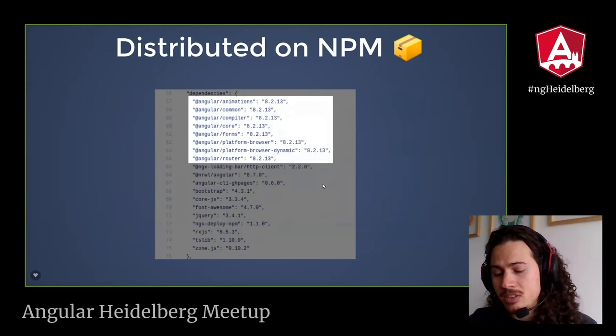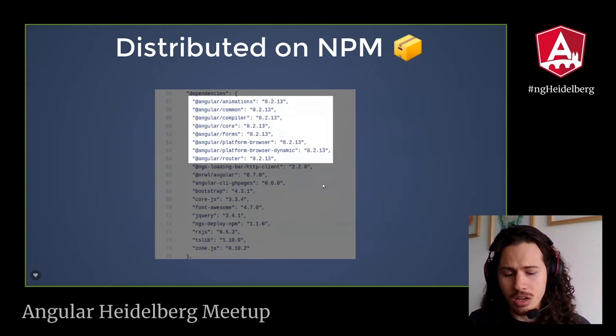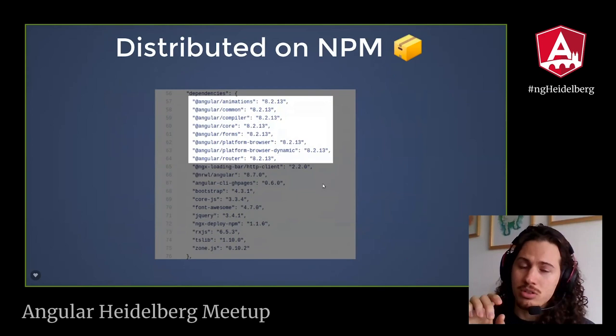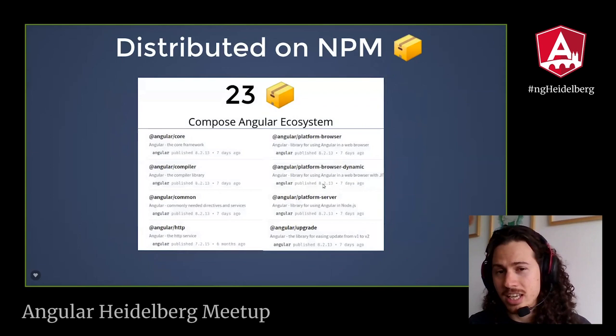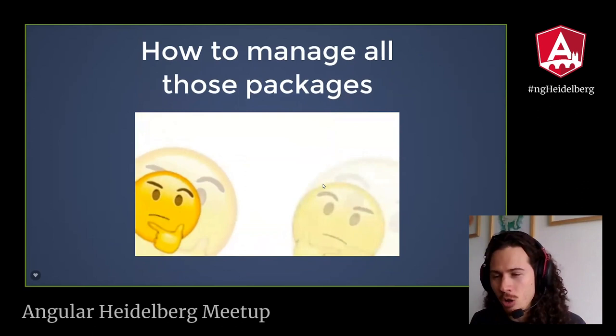All those features are being distributed as NPM packages. You know that because when you look at the package.json of an Angular application, you are going to see on the dependencies all the packages being installed. Currently there are 23 NPM packages that compose the Angular ecosystem — and 23 is a big number. So how do you manage all those packages?